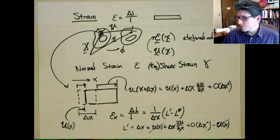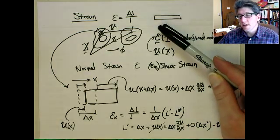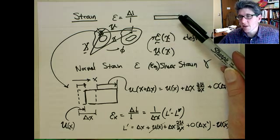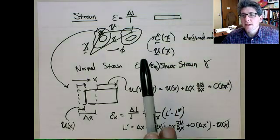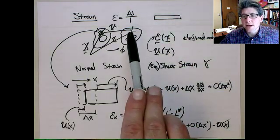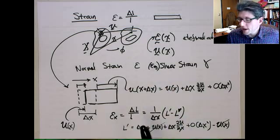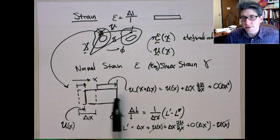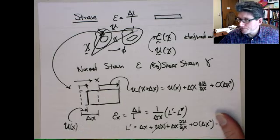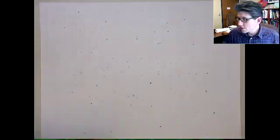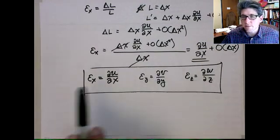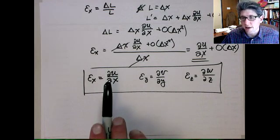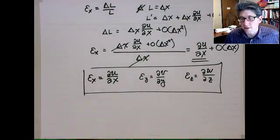Last time we talked about strain being defined at a point as opposed to being defined over a finite length. As an undergraduate, you think of it as change in length over length. But we really need to start thinking more of it in terms of a continuum, where it describes the deformation in the vicinity of a point. We looked at the normal strain — this is like a stretching — and showed that the normal strains in the x, y, and z directions are simply partial derivatives of the displacement in that direction with respect to x, y, or z, respectively.